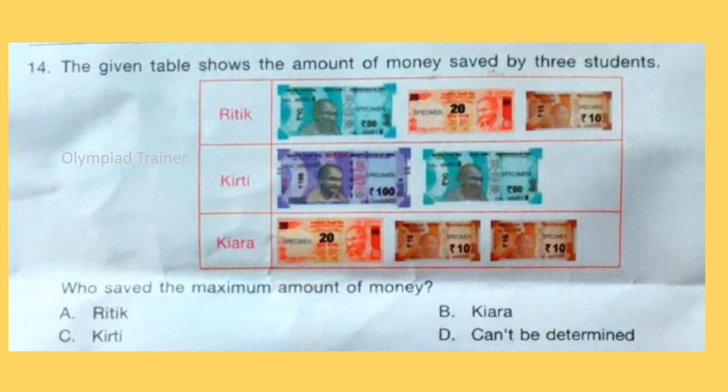Question 14: The given table shows the amount of money saved by three students, Hrithik, Kirti and Kaira. Who saved the maximum amount of money? Answer is Option C, Kirti. She saved Rs 150.